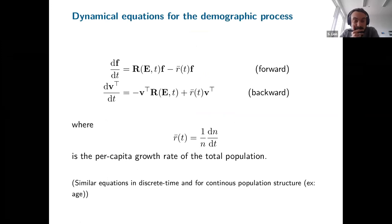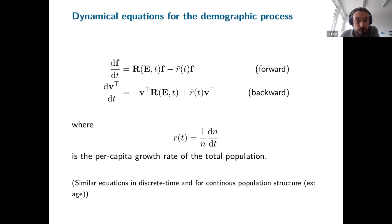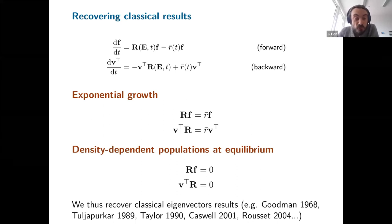One last thing about this part: for these demographic variables — class frequencies and reproductive values of individuals in each class — we have dynamical equations representing the forward and backward looking ways of looking at demography. In principle, we have equations to calculate reproductive value at each time. In the specific limit cases of exponential growth or equilibrium populations, you can recover the fact that V and F are right and left eigenvectors of the transition matrix of the population, recovering all the classical eigenvector results for reproductive value and class frequencies.